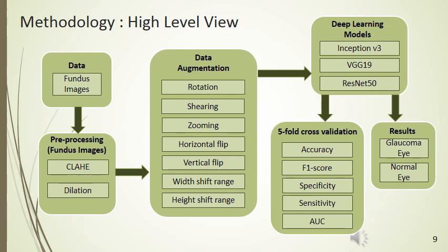Histogram equalization is commonly used as an image pre-processing method for enhancing image quality and contrast. Dilation is a morphological operation used to improve image brightness and increase the size of images. After that, we apply different augmentation techniques to avoid data overfitting and address the class imbalance problem.